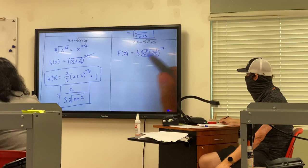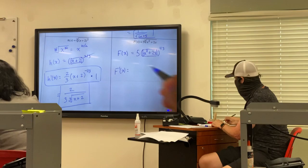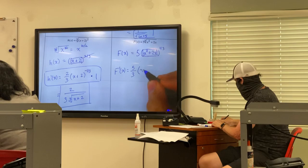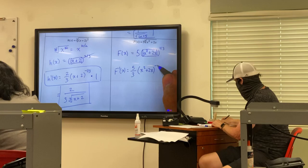Okay, what would I do first? Five times one third. How would I write that? Five thirds. Then parentheses x squared plus 2x to what power?